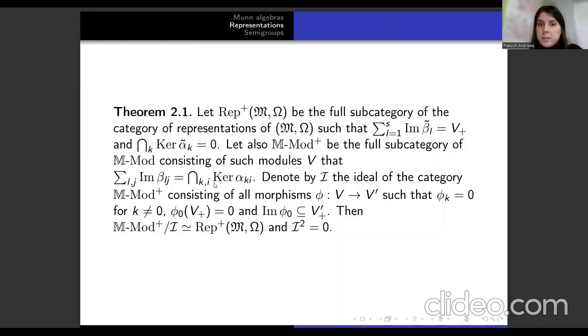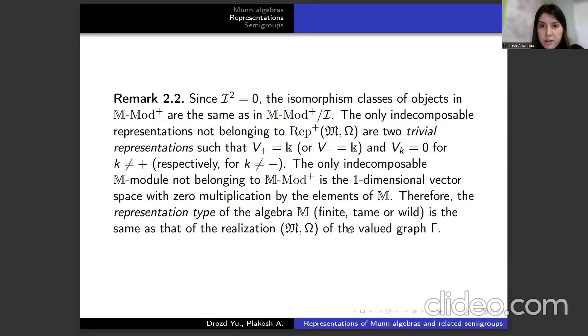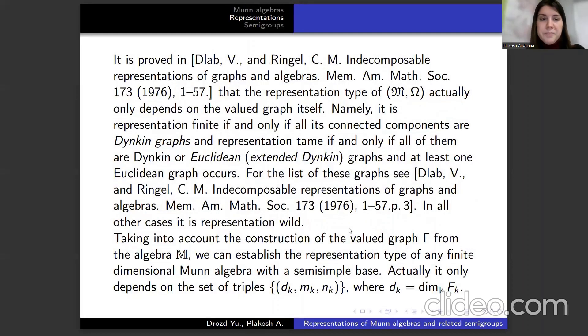Let M-mod⁺ be the full subcategory of M-mod consisting of such modules. Denote by e the ideal of the category M-mod⁺ consisting of all morphisms φ such that φₖ equals zero for k≠0. Then M-mod⁺/e is isomorphic to Rep(M,ω) and e² equals zero. We will skip the remarks because we have not much time.